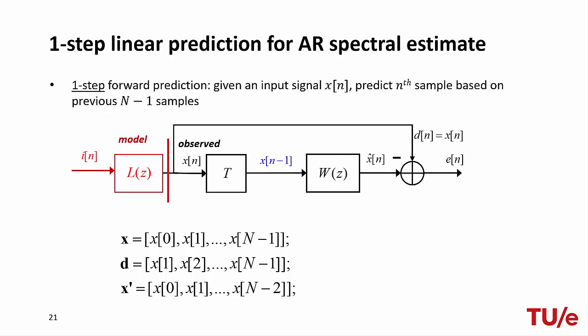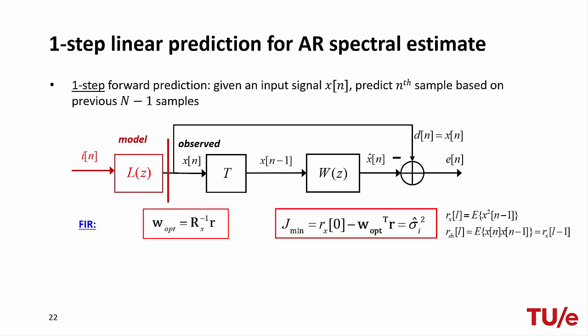When designing a one-step linear predictor, the delay is 1. In practice, for a signal of length N running from 0 to N−1, we use samples 1 to N−1 for the desired signal d, and samples 0 to N−2 for the delayed version of x as input to the filter, representing the predictable part. The key final step is that we want the filter error to be white noise, because we modeled our signal as an autoregressive process — subtracting the predictable part from the observed signal should leave us with white noise.